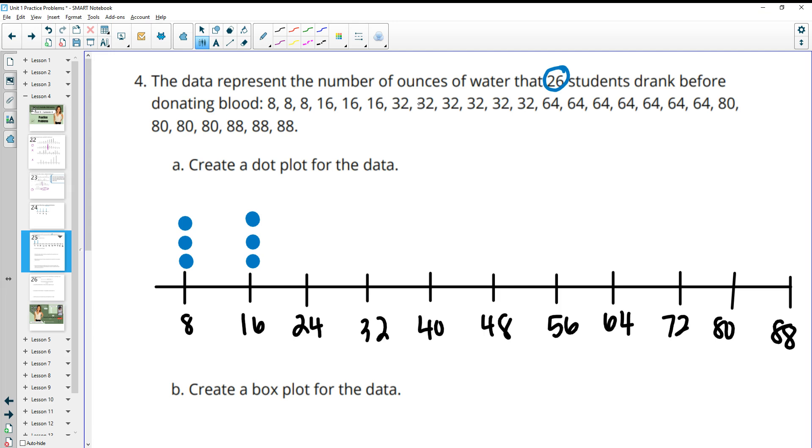32 is there one, two, three, four, five, six times. 64 is there one, two, three. Oh, whoops. 32, not 24. Move this over here. 64 is there one, two, three, four, five, six, seven times. 80 is there four times. And then 88 is there three times.